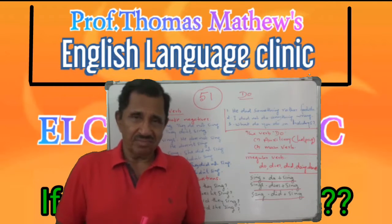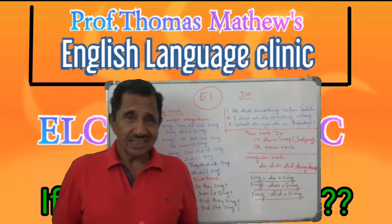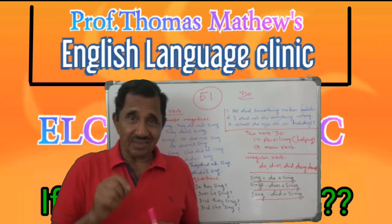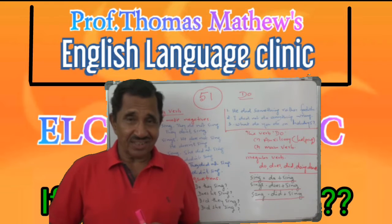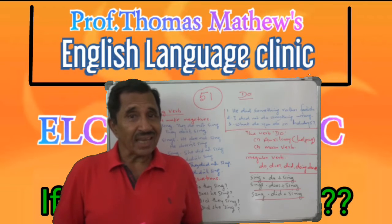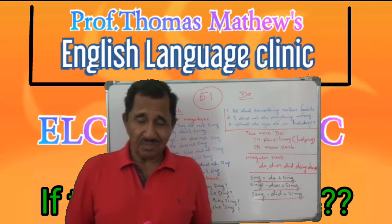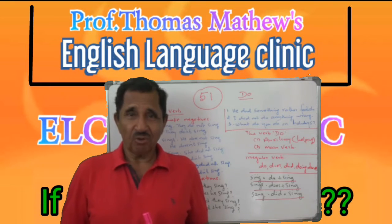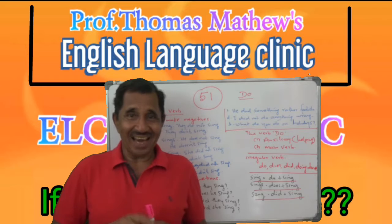Do is also a main verb. As an auxiliary verb, there are two functions. One is: help to make negatives in the simple present and simple past. The second function is: help to make questions in the simple present and simple past. What is peculiar about simple present and simple past? There is only one word — you can call it a bachelor tense, unmarried.